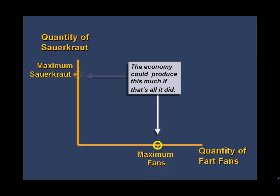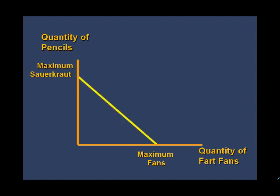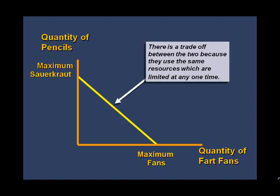Conversely, if we devoted all of our resources into making just fart fans, we could produce this number of fans. But it's not all or nothing — we have choices. We can produce different combinations of sauerkraut and fart fans by transferring resources between the two. The curve is negatively sloped, since both goods use the same resources and we have a finite amount of them, so producing more of one means giving up some of the other.